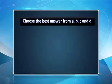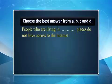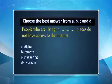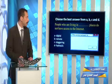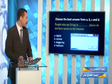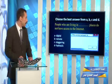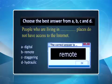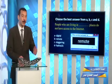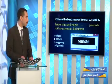Another example: people who are living in blank places do not have access to the internet. The choices are digital, remote, staggering, or hydraulic. Of course it's remote. So people who are living in remote — that is, far away — places do not have access to the internet.